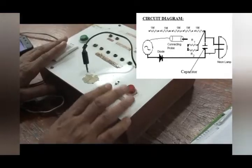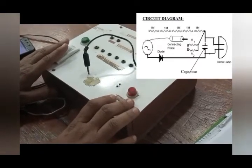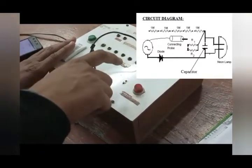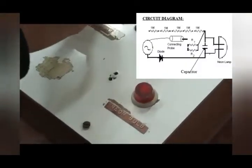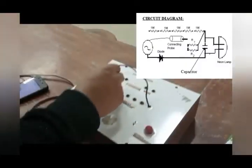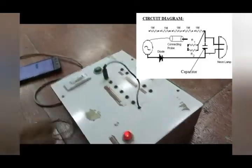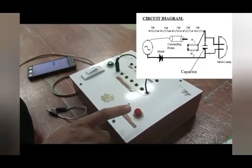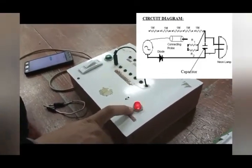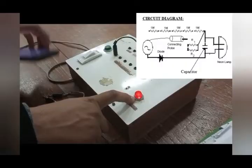The circuit diagram of this experiment is: neon bulb is attached in parallel to the capacitor and all six resistances are placed in series with each other. When we open the power supply, the bulb starts flashing. It is because of the charging and discharging of the capacitor.